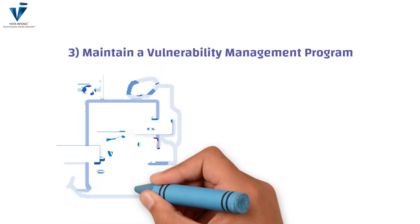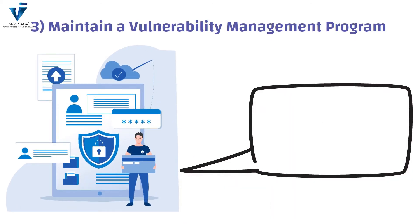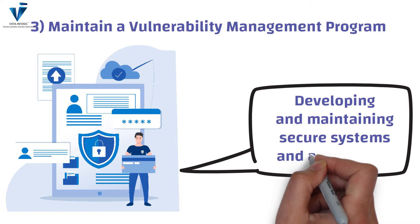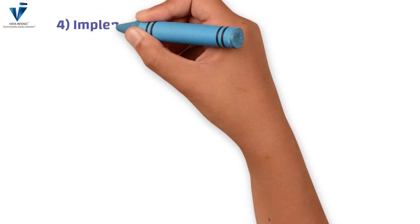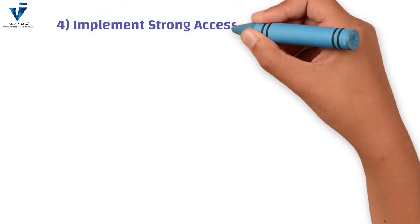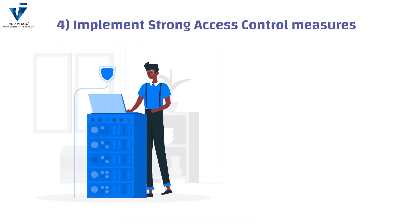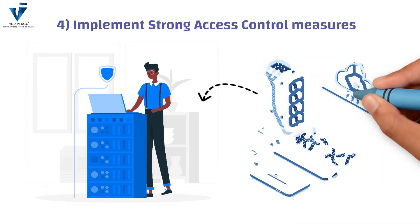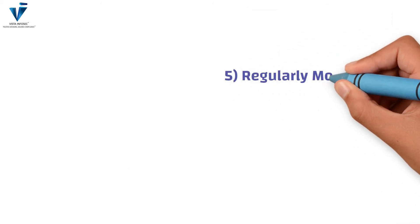The third requirement is to maintain a vulnerability management program. This includes protecting all systems against malware, regularly updating antivirus software and other security programs, and developing and maintaining secure systems and applications. The fourth requirement is implementing strong access control measures, which includes restricting access to cardholder data on a business need-to-know basis, and identifying and authenticating access to system components.